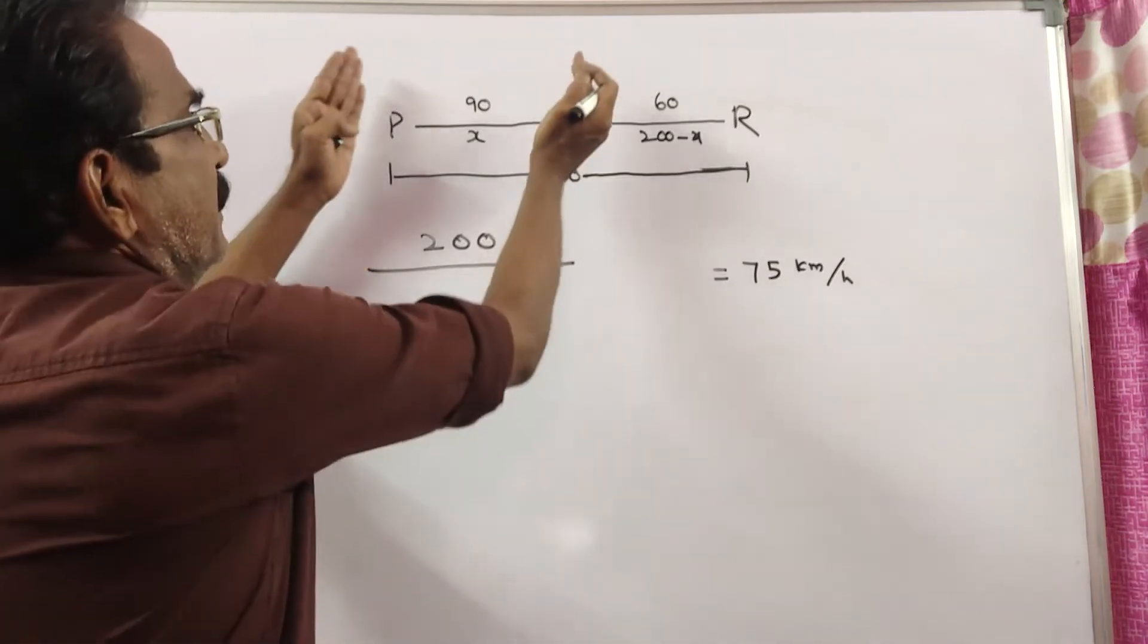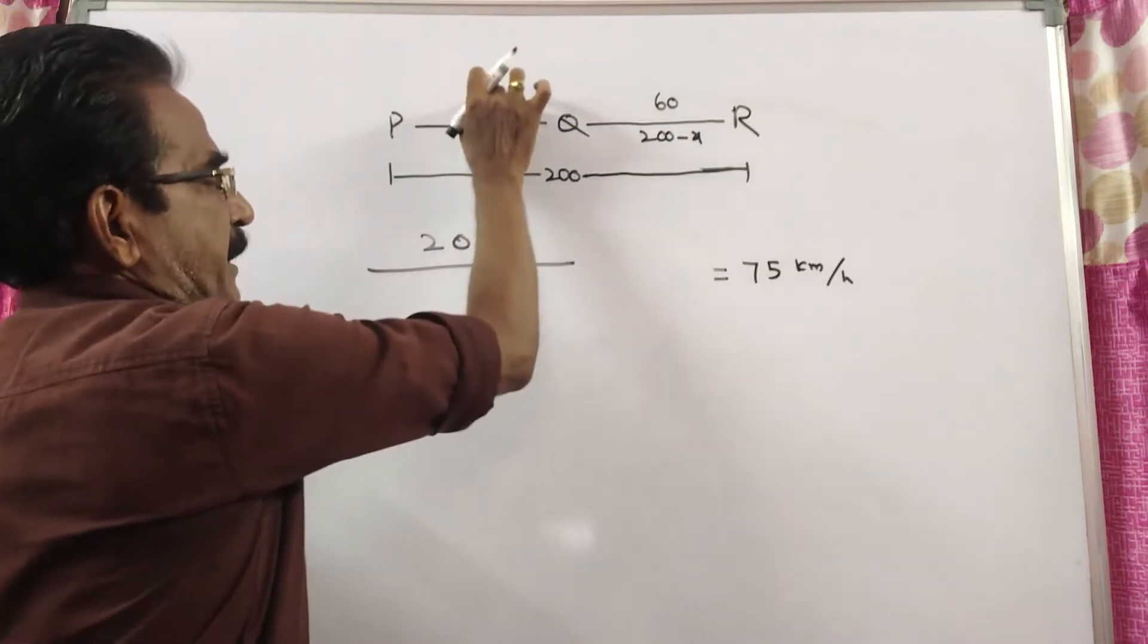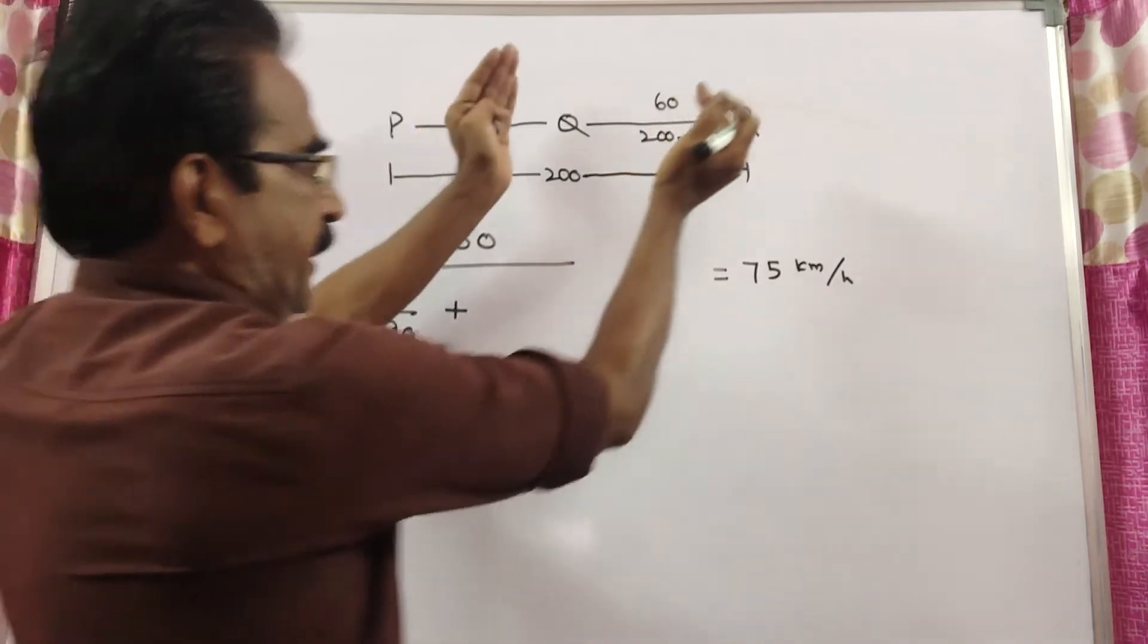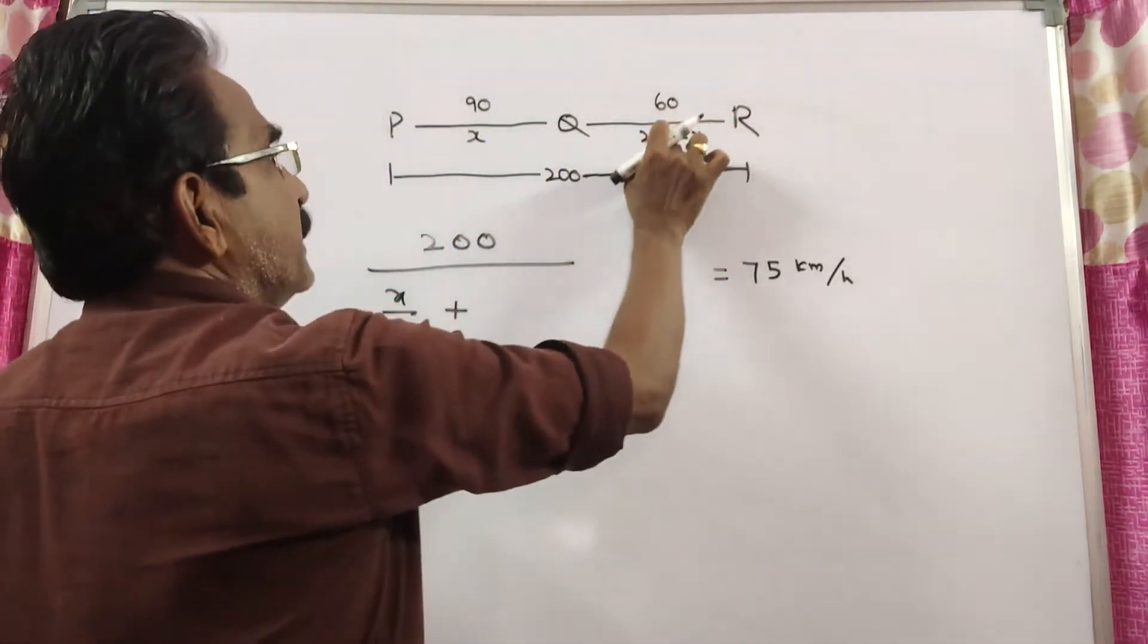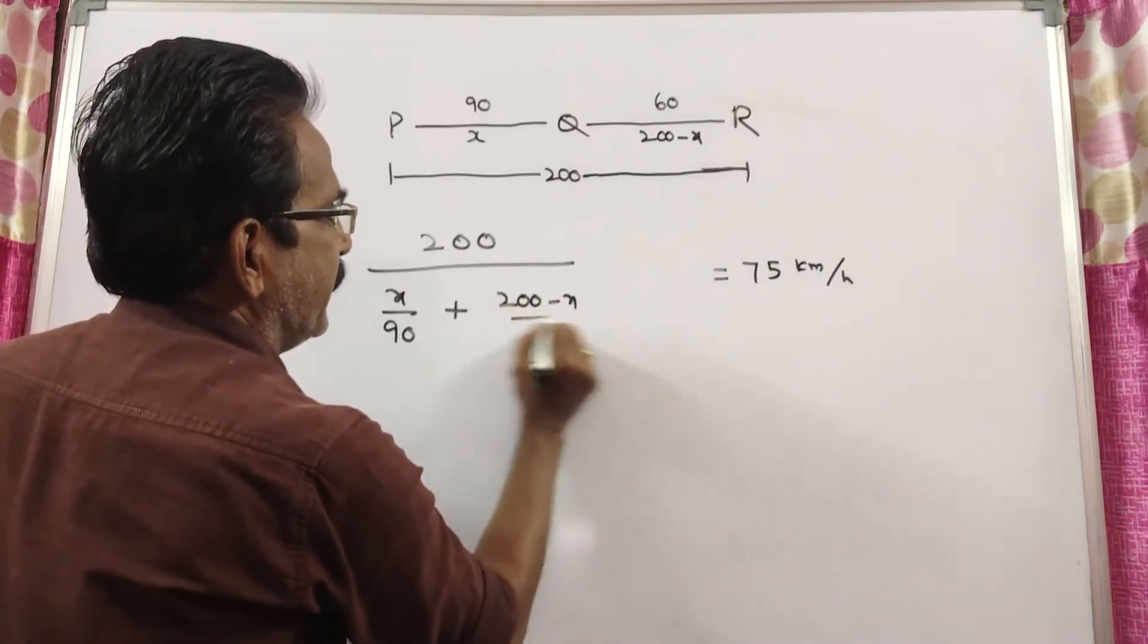Total time taken means time from P to Q plus time from Q to R. Distance divided by speed: x by 90 plus 200 minus x by 60.